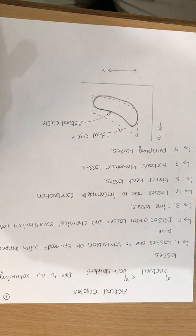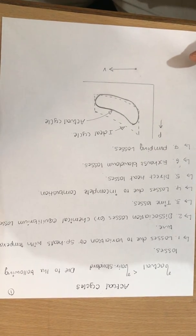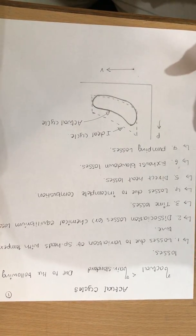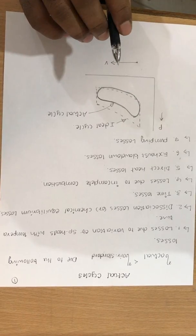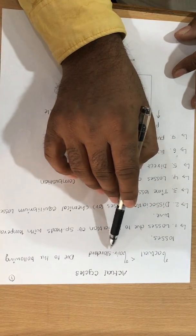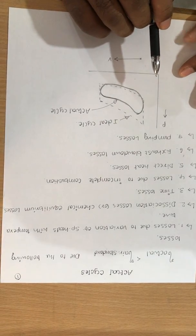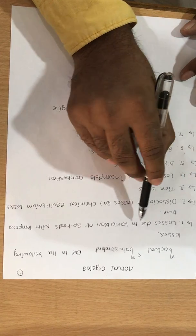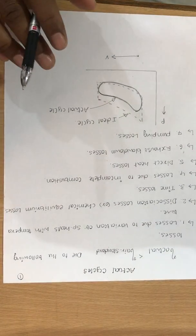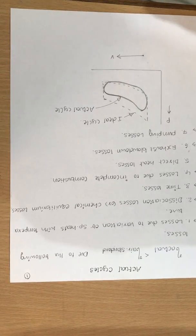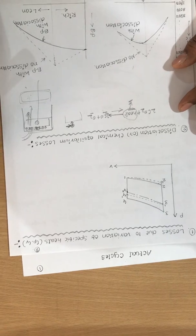Good morning. Welcome to the series of lectures on internal combustion engines. Today we are going to discuss actual cycles. In this regard, we should compare how actual efficiency is related to air standard efficiency. Actual efficiency is always less than air standard efficiency due to the following losses. I will study these losses one by one. In the first lecture, I will study losses due to variation of specific heats with temperature.